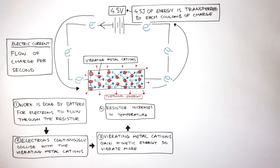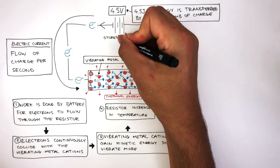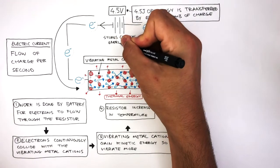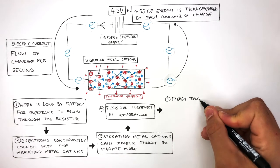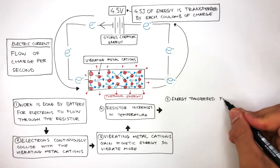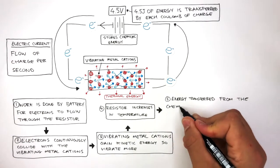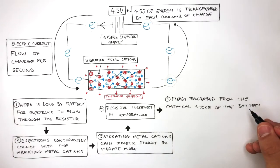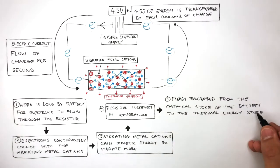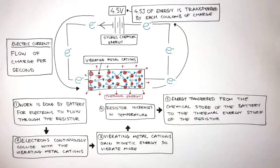At the very beginning, it is the battery which stores chemical energy. So the overall energy transfer is: energy is transferred from the chemical energy store of the battery to the thermal energy store of the resistor.